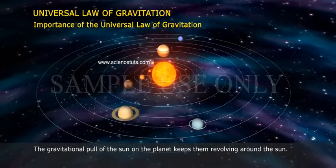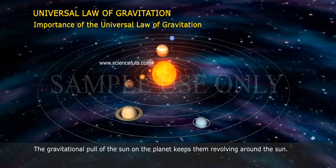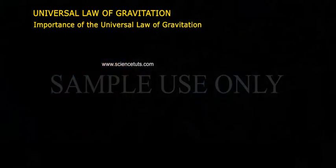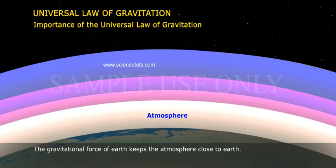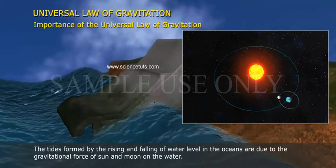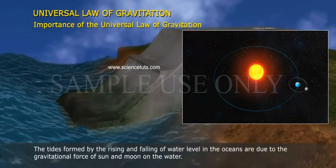The gravitational pull of the Sun on the planets keeps them revolving around the Sun. The Moon revolves around the Earth. The gravitational force of Earth keeps the atmosphere close to Earth. The tides formed by the rising and falling of water level in the oceans are due to the gravitational force of Sun and Moon on the water.